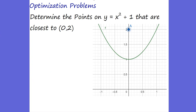One last optimization problem. Determine the points on Y equals X squared plus 1 that are closest to the point (0, 2). A lot of times we try to do this from (0, 0) — same type of problem. We're trying to find the closest distance. The shortest distance between two points is a straight line. What value minimizes this distance? When you see 'closest' or 'minimum,' think optimization.